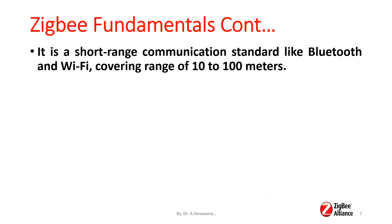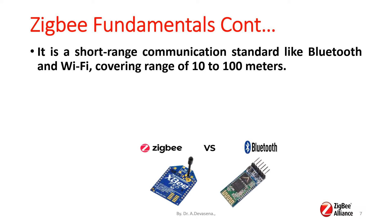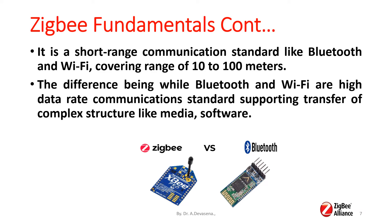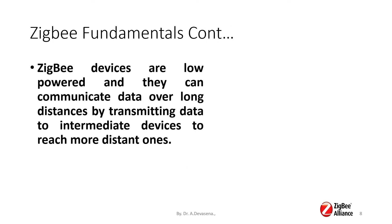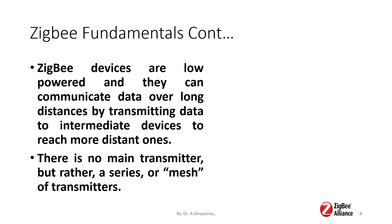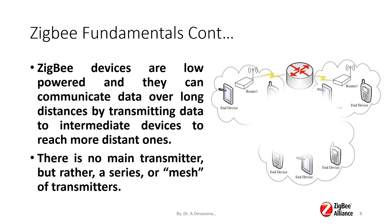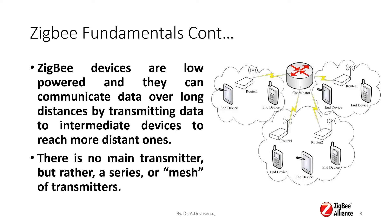Zigbee is a short-range communication standard like Bluetooth and Wi-Fi, covering a range of 10 to 100 meters. Bluetooth and Wi-Fi are high data rate communication standards supporting transfer of complex structures like media and software. Zigbee devices are low power and can communicate data over long distances by transmitting data through intermediate devices. There is no main transmitter, but rather a series or mesh of transmitters.